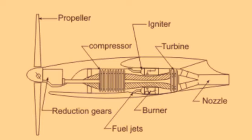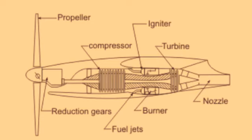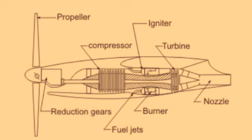In a turboprop engine, the jet exhaust velocity is not as high compared to turbojet and turbofan engines, because maximum thrust is produced by the propeller. In a turbofan you get maximum thrust from a ducted fan, and in a turbojet you get thrust from high jet velocity. In a turboprop, maximum thrust comes from the rotation of the propeller.